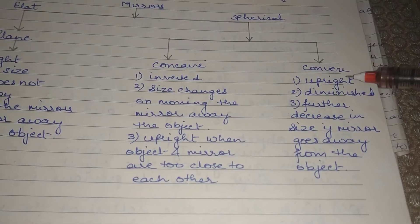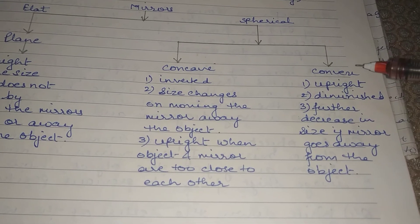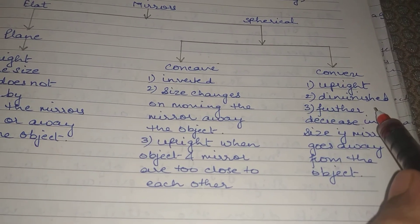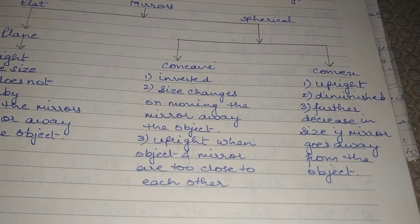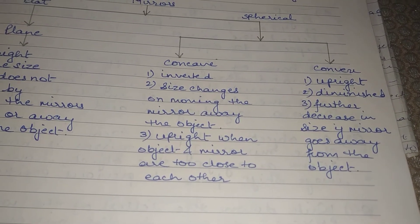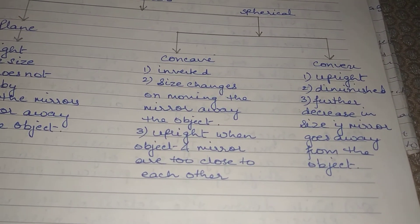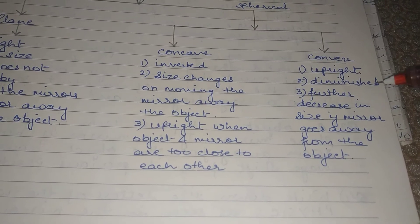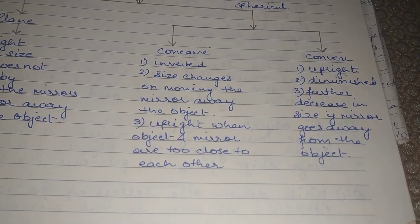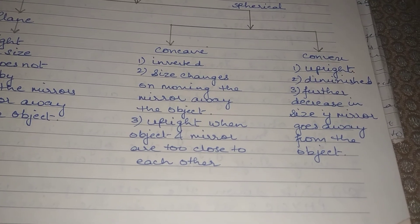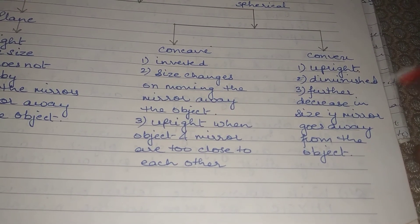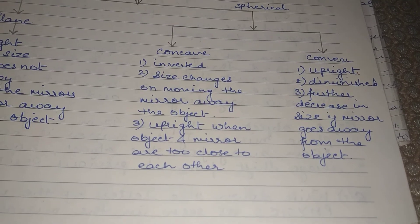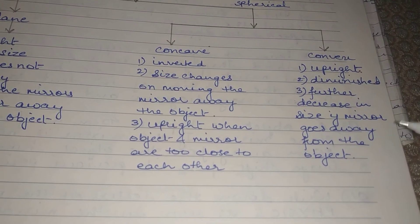However, in front of a convex mirror, you will always find your image to be erect as well as very small or diminished, no matter where you are standing. Whether you are very far from the mirror or very close to it, the image will always be upright and diminished — smaller than the size of the object. You will also notice that the size of the image decreases as you move away from the mirror.